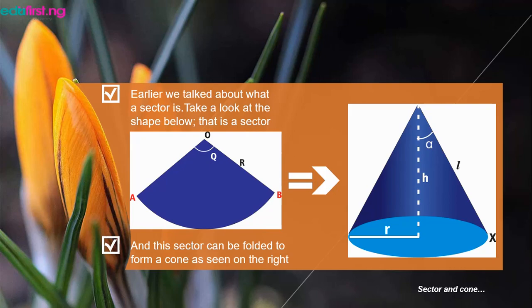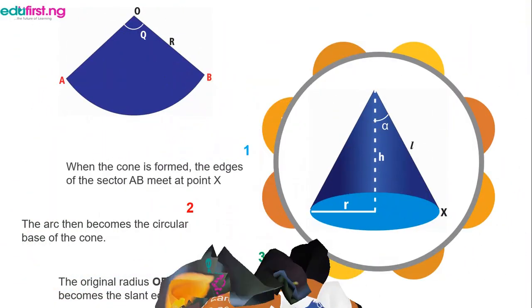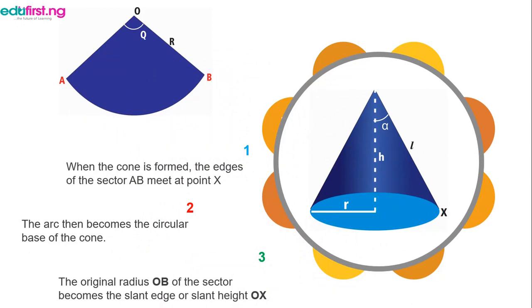Now, when the cone is formed, like we have in a diagram here, the edges of the sector AB meet at point X. Then, the arc of the sector becomes the circular base of the cone.